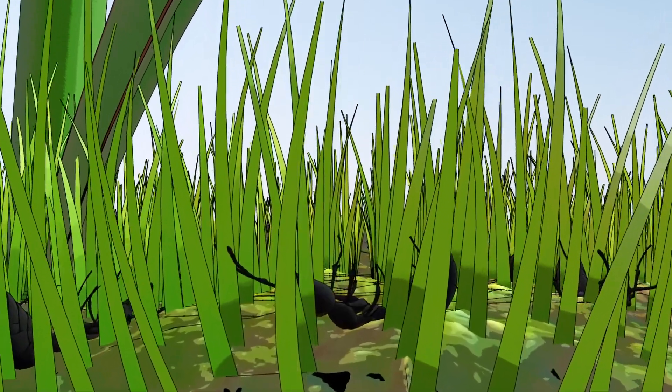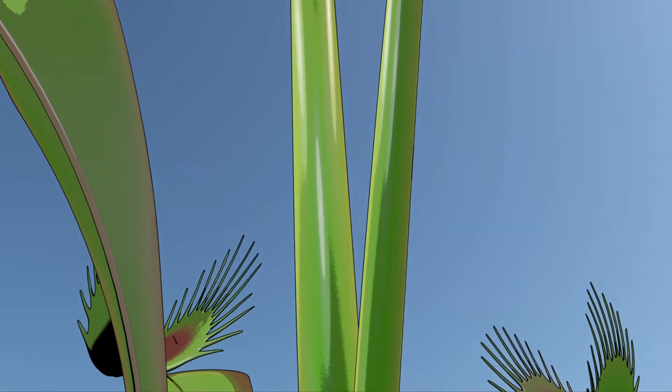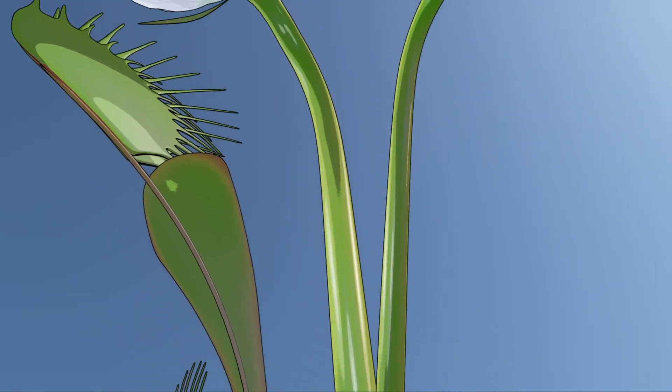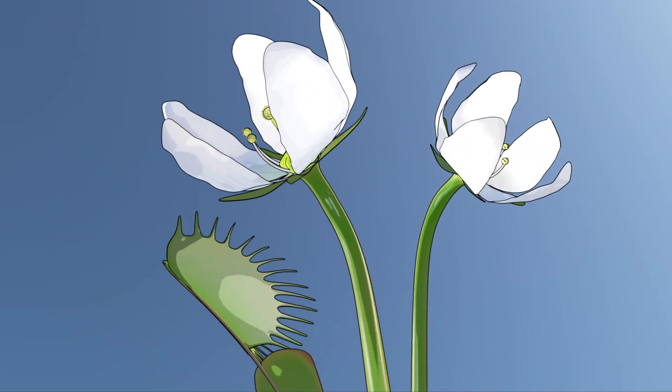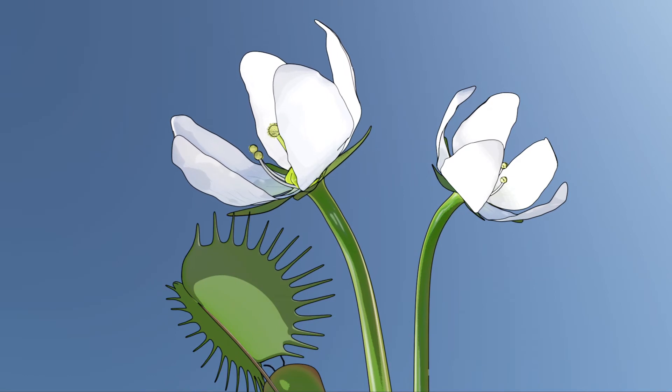Once the prey has been digested, the water concentration in the two cell layers returns to normal, opening the lobes and allowing the flytrap to strike again.